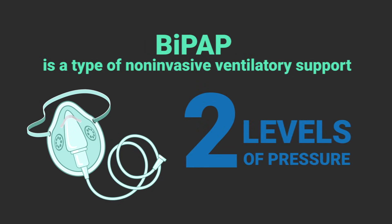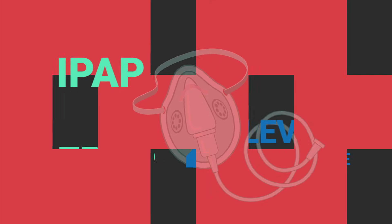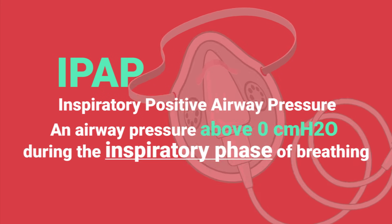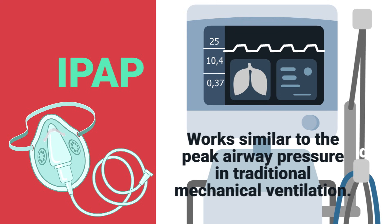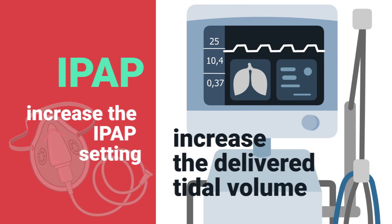IPAP stands for inspiratory positive airway pressure. It's an airway pressure that is above zero during the inspiratory phase of breathing. It works similar to the peak airway pressure in traditional mechanical ventilation, so if you were to increase the IPAP setting, this will increase the delivered tidal volume.